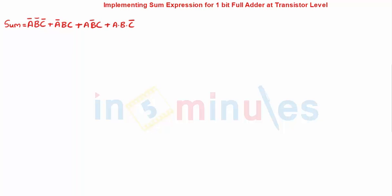In one of the previous clips we have seen that the sum expression which we found from the truth table was nothing but A bar dot B bar dot C bar plus A bar dot B dot C plus A dot B bar dot C plus A dot B dot C bar, which is nothing but A XOR B XOR C.